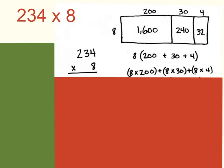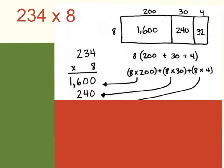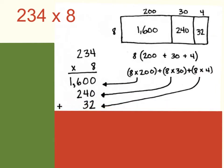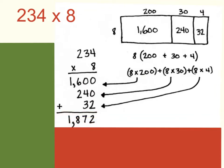Let's go ahead and solve for each problem. 8 times 200 would give me a product of 1,600. Next, we multiply 8 times 30, which would give me a product of 240. And then finally, we multiply 8 times 4, which would give me a product of 32. Now that I have all of my partial products, I need to add these together to get a final product of 1,872.